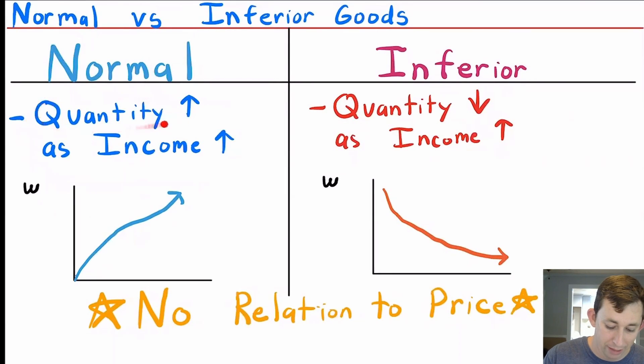Normal means that the quantity of that good in my optimal bundle is going up as my income or my wealth goes up. So my wealth expansion might look something like this where it's got a positive slope.